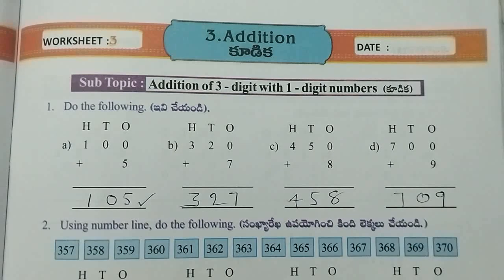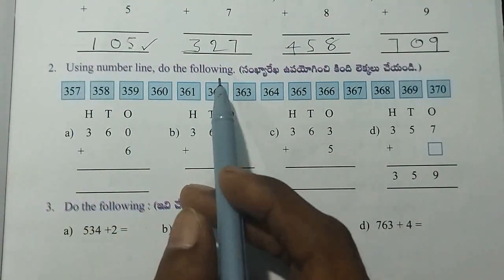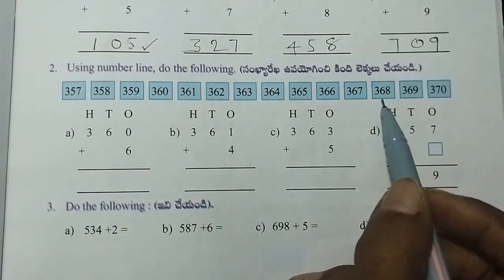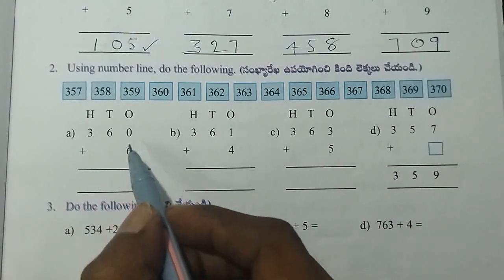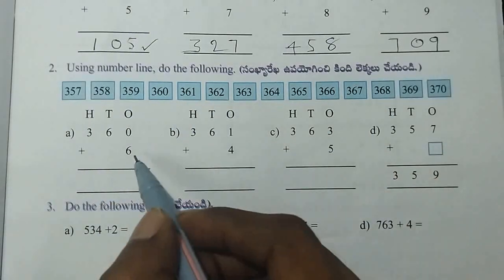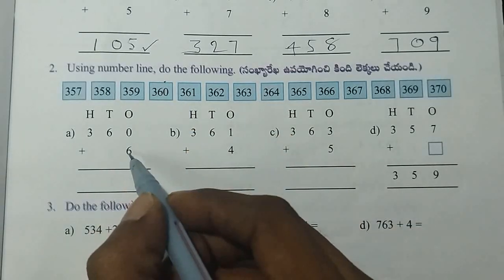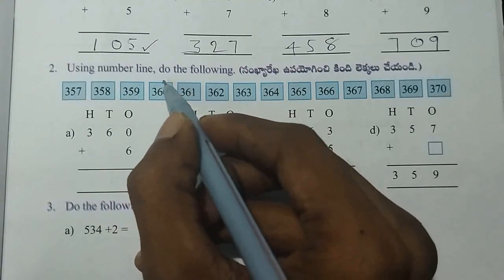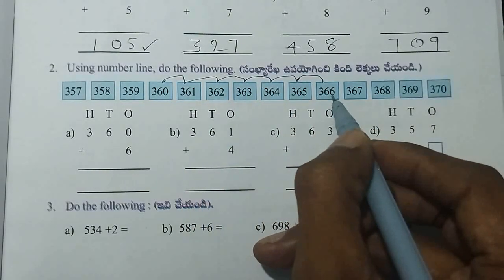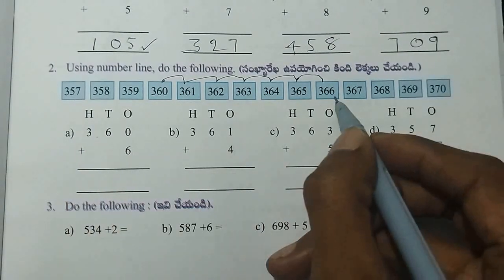Here we had a number using two for the following. If you have a number, you can use this number. So, 360. Here is 6. This number is 360. So, 360 is 6. 1, 2, 3, 4, 5, 6. It is 360. So, 360 is 6. 6 is equal to 366.